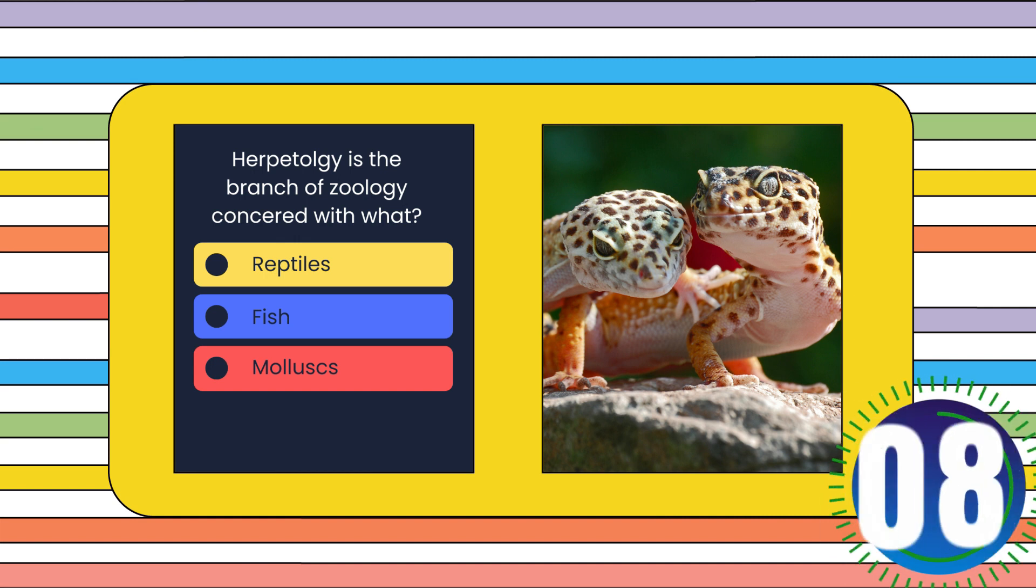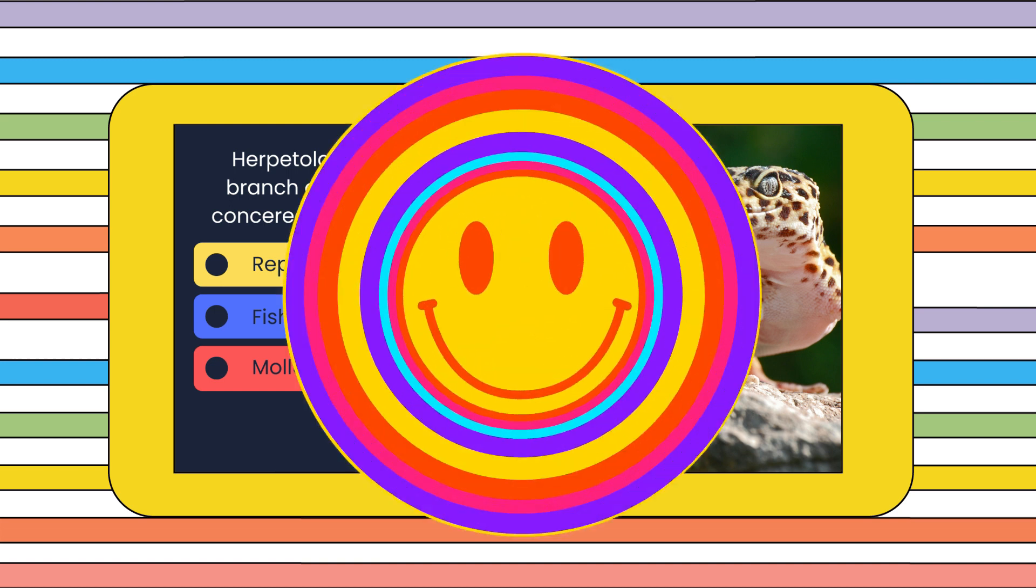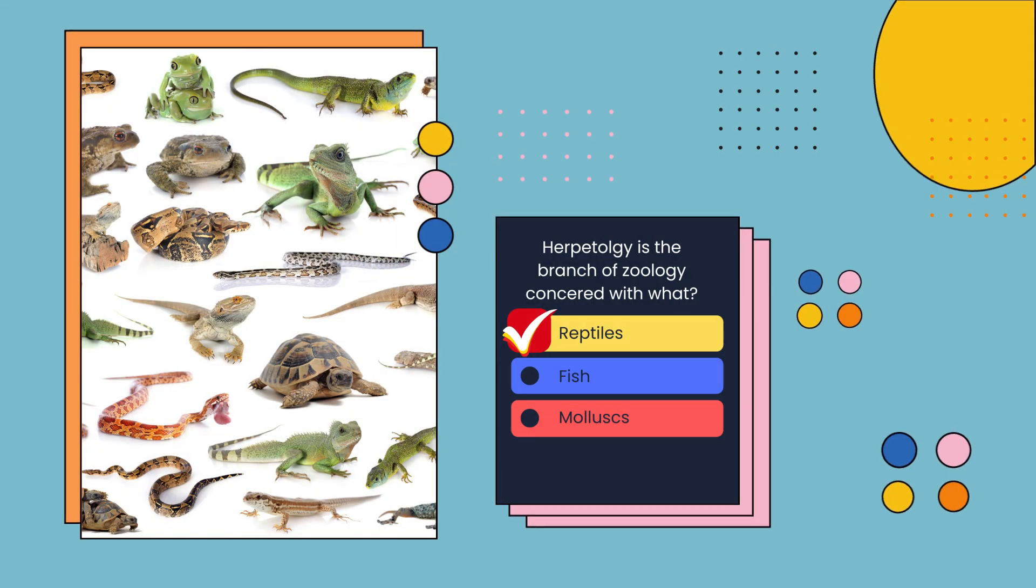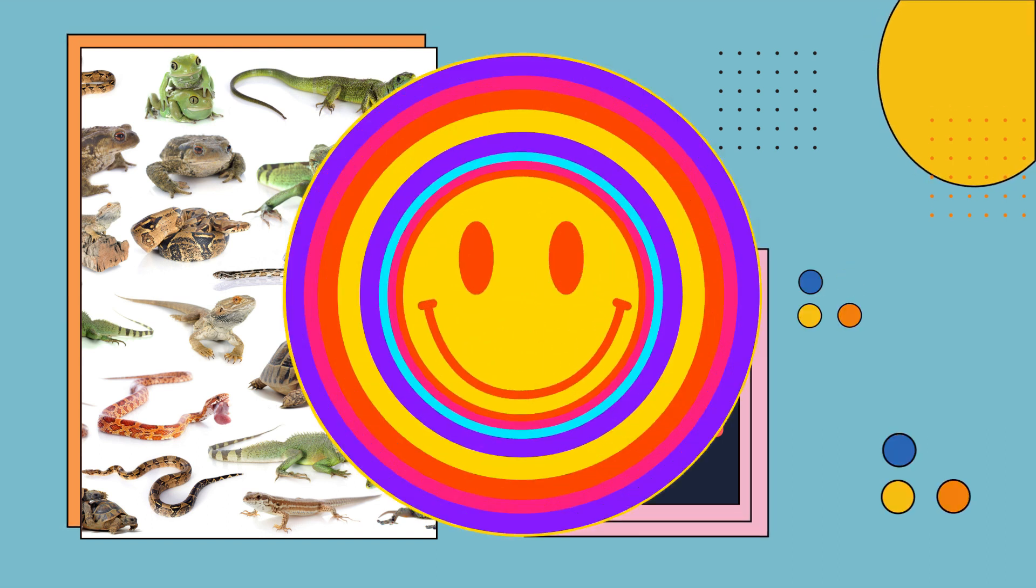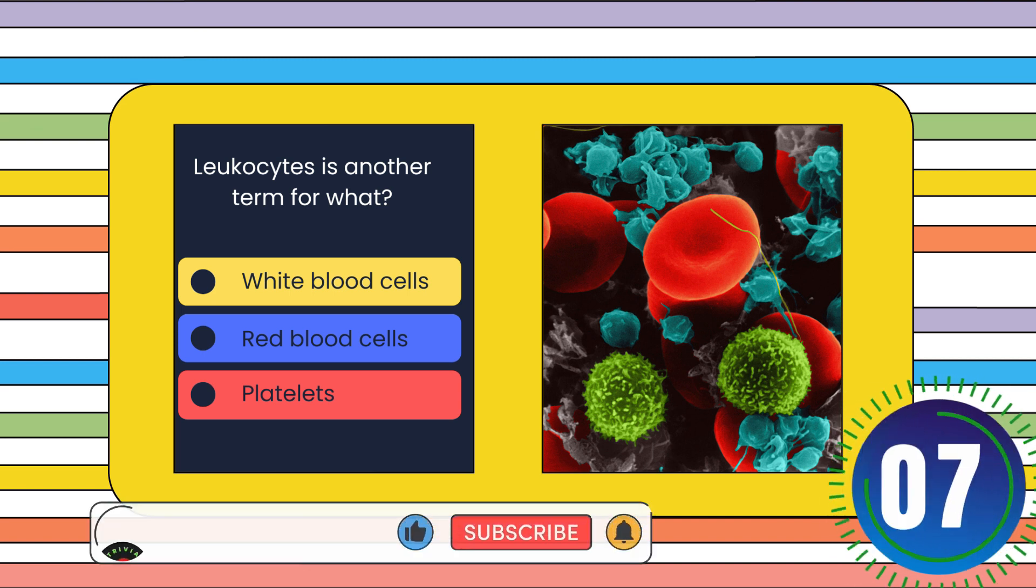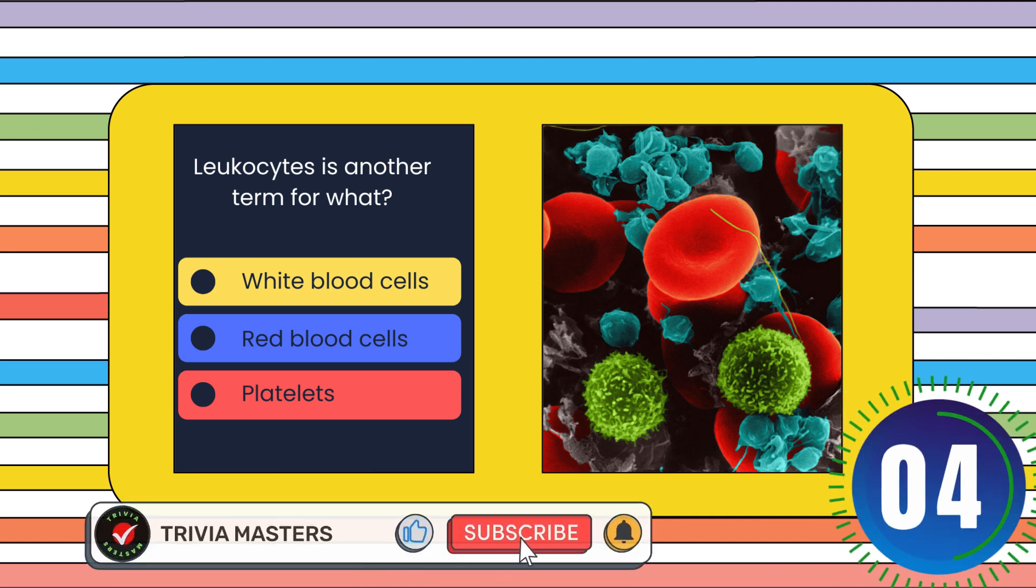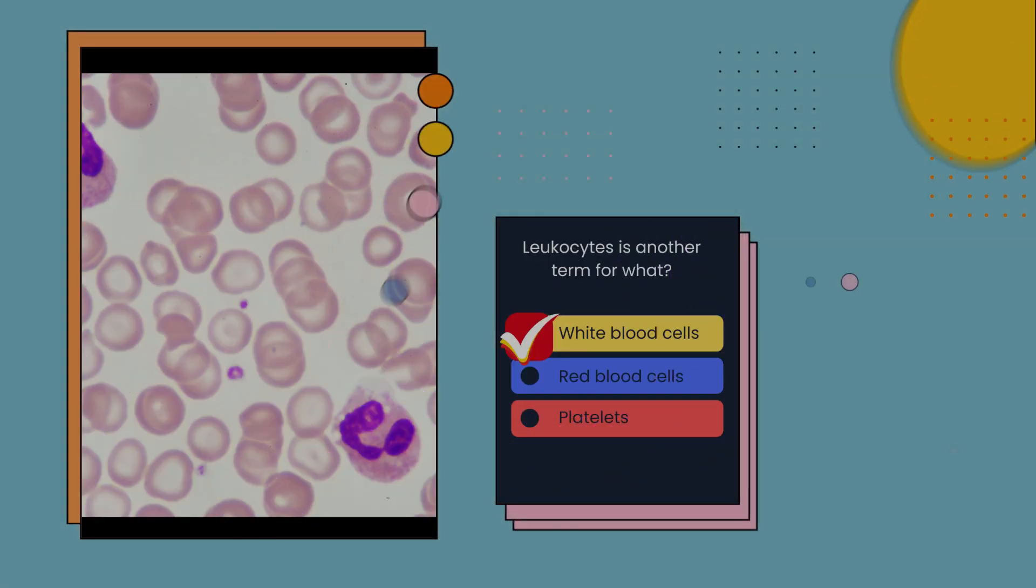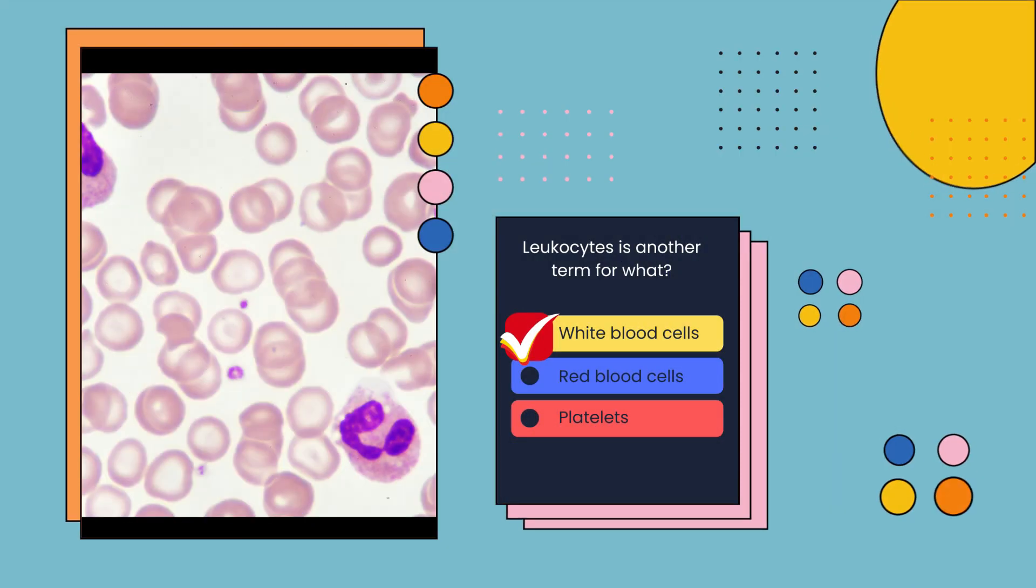Herpetology is the branch of zoology concerned with what? Reptiles, fish, or mollusks? Reptiles. Leukocytes is another term for what? White blood cells, red blood cells, or platelets? White blood cells.